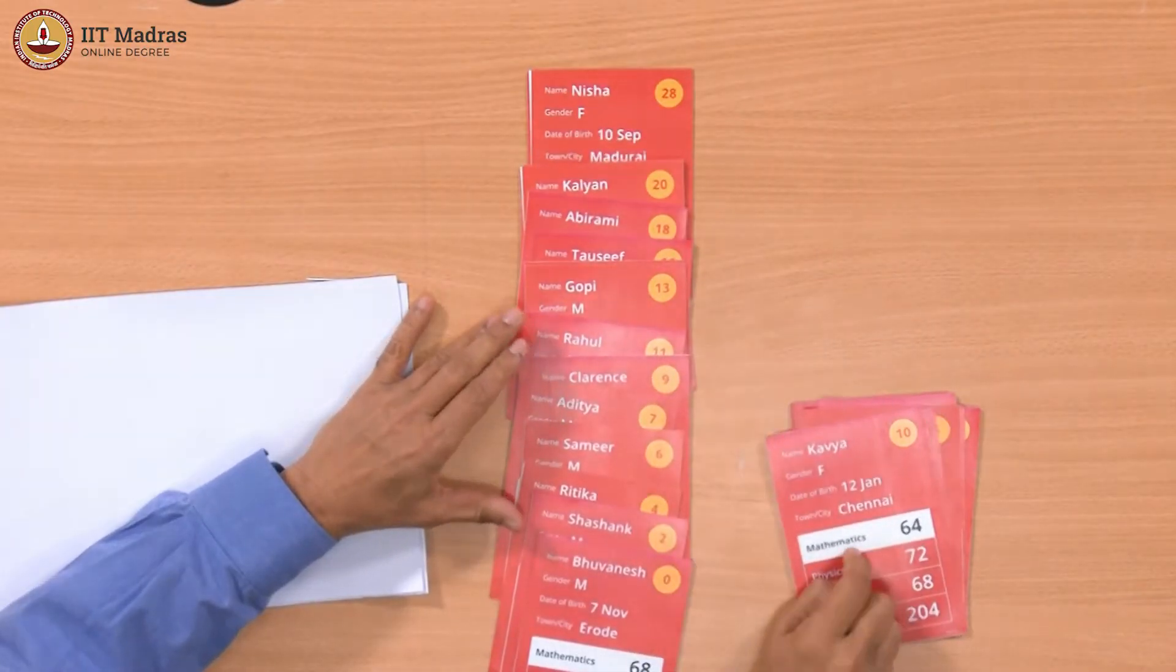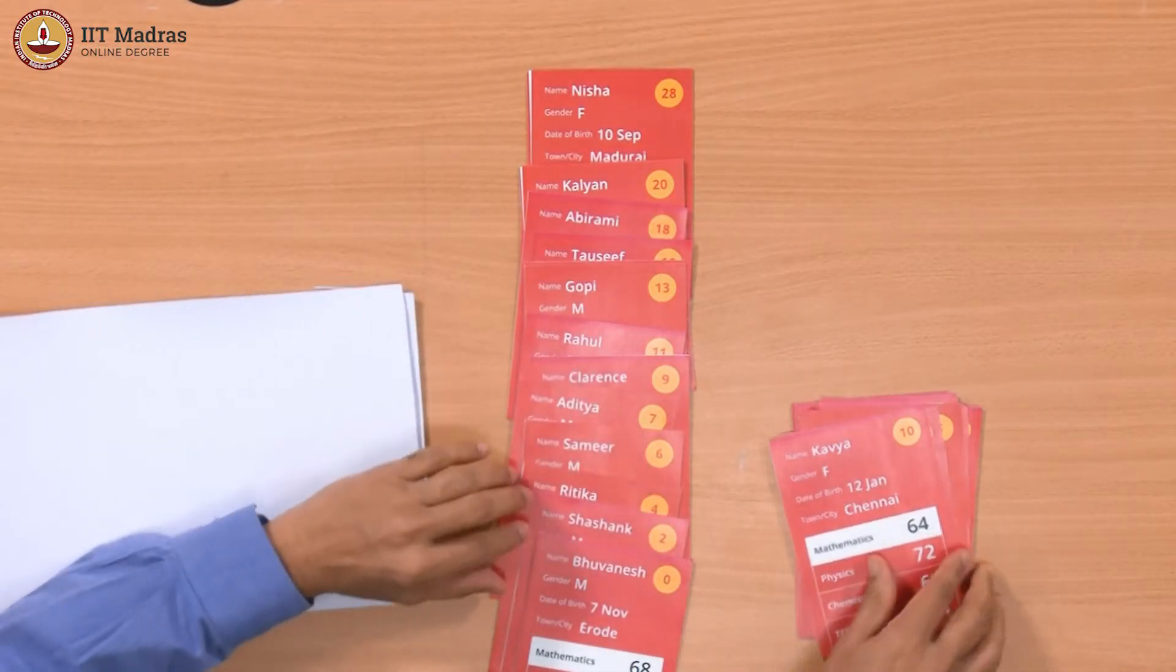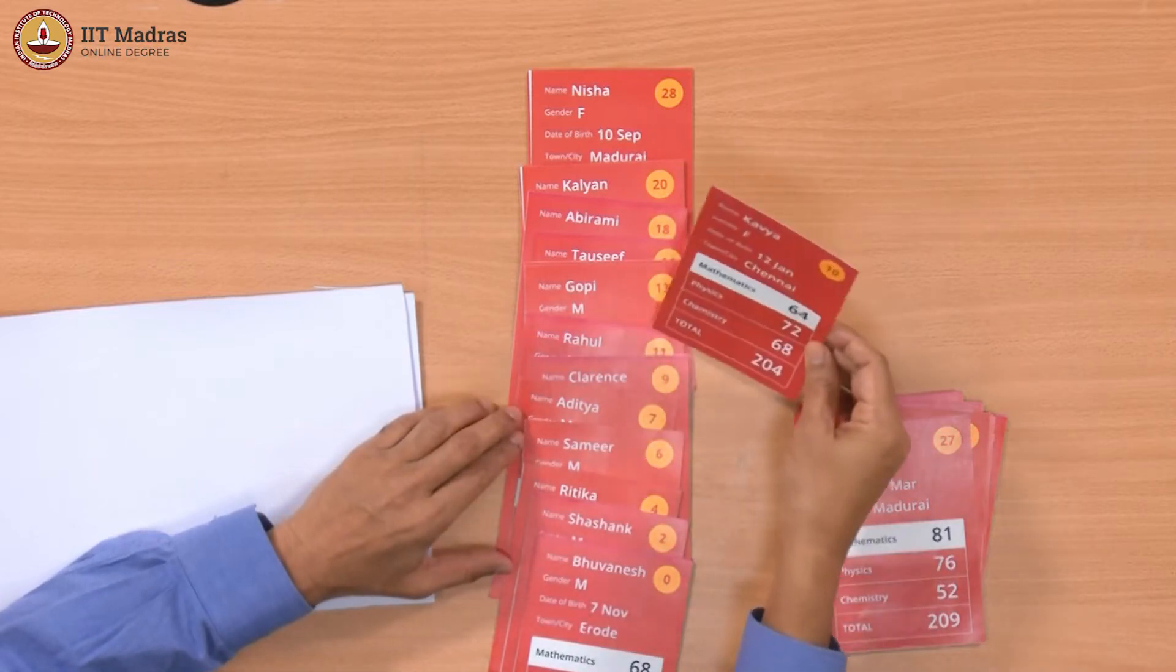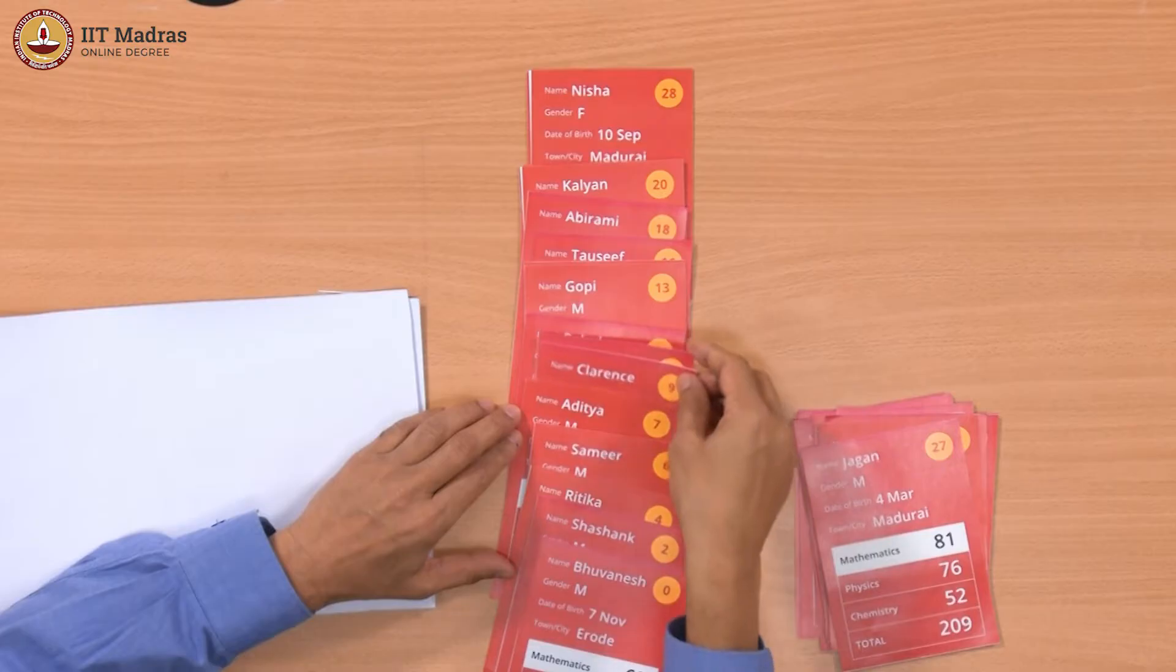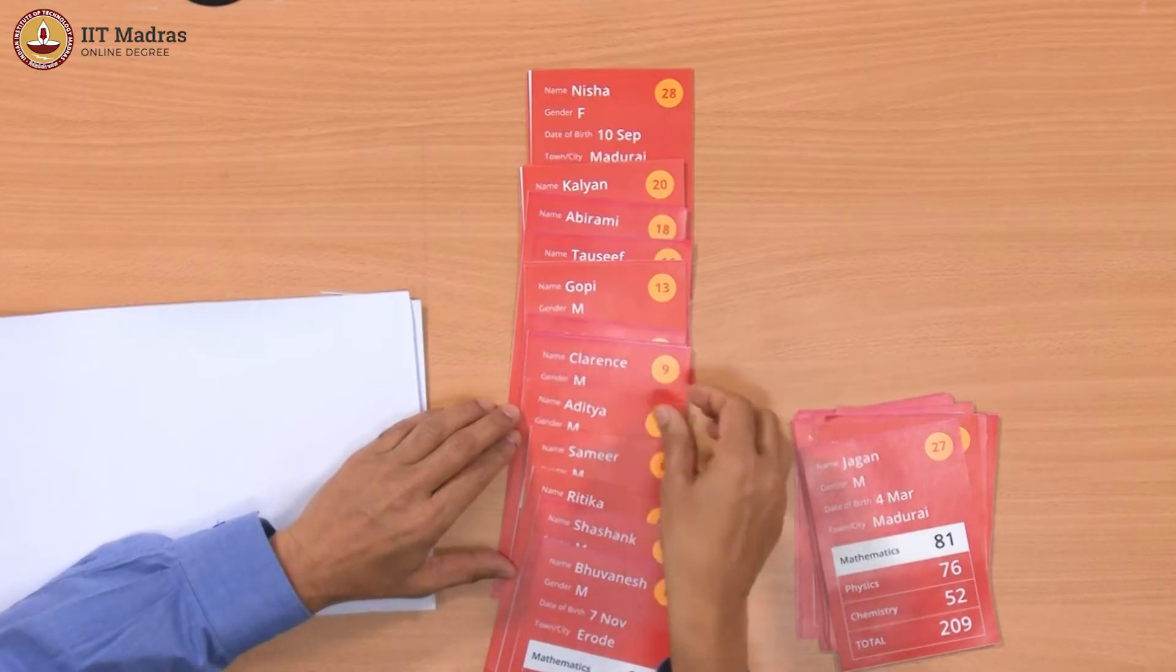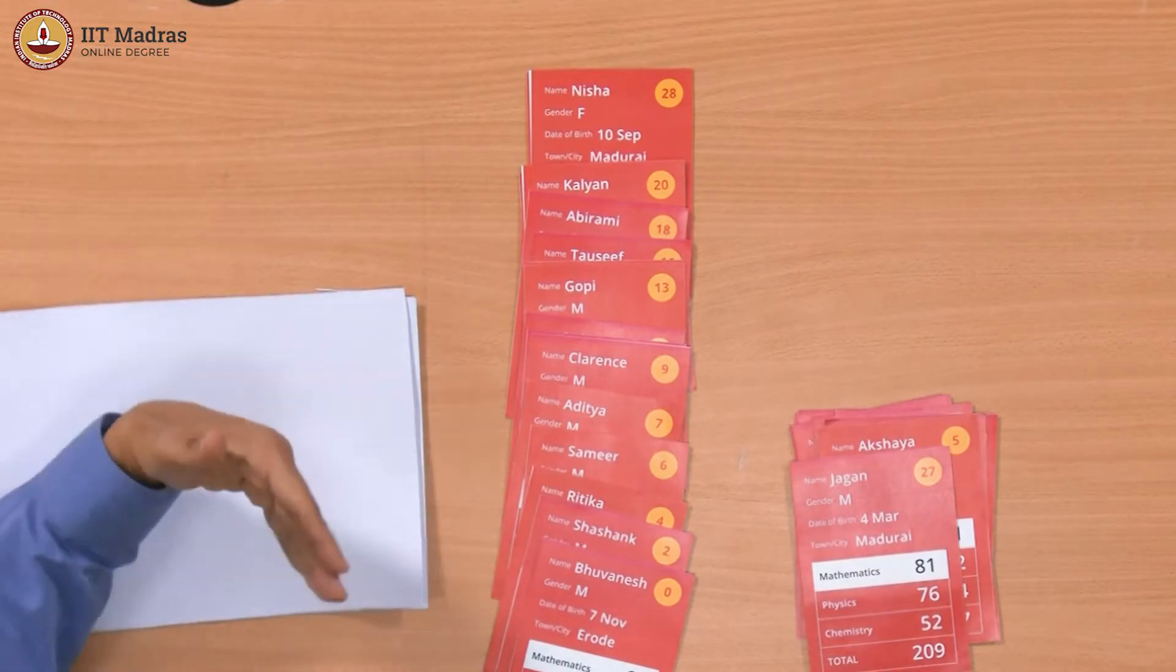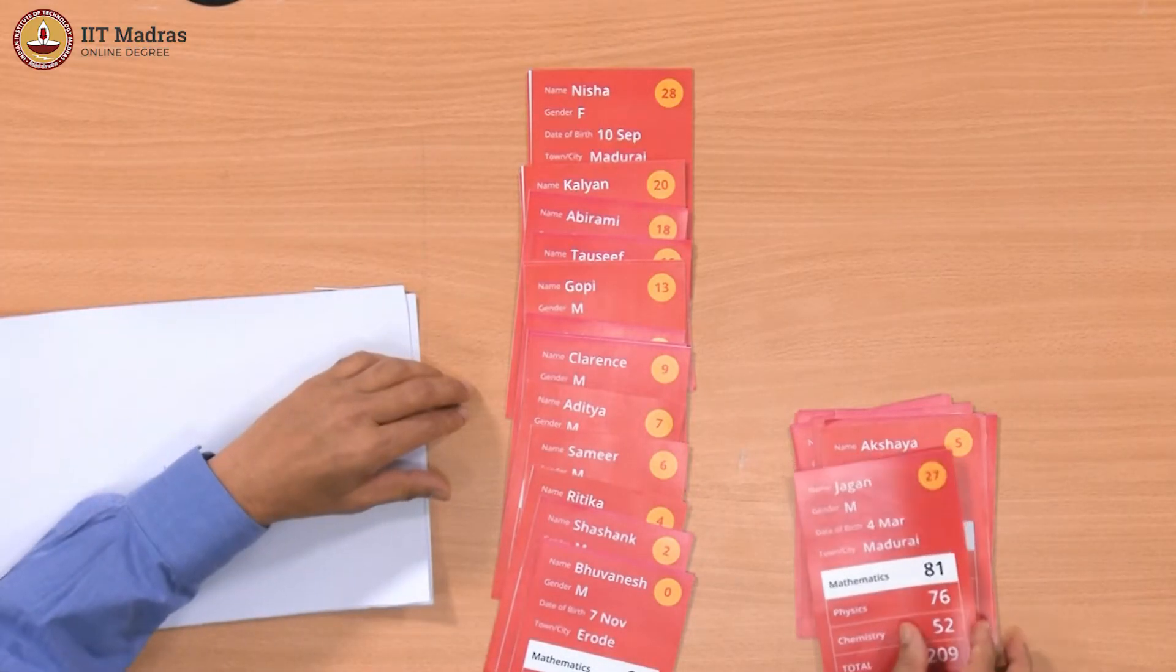It is a nested iteration. For every card here, I will go through all the cards I have already seen and stop at the right place. So it is going to be 30 into 30 type of thing. Initially you are comparing with one card then two cards, 1 plus 2 plus 3. That would be something like n into n minus 1 by 2, or n squared.